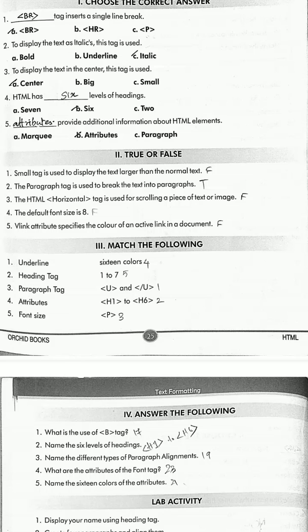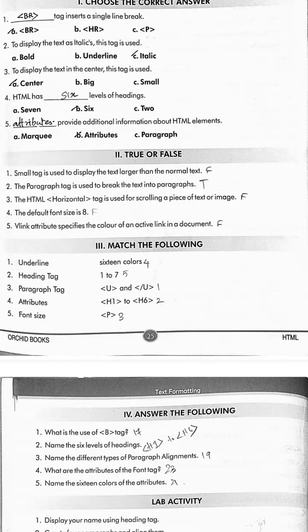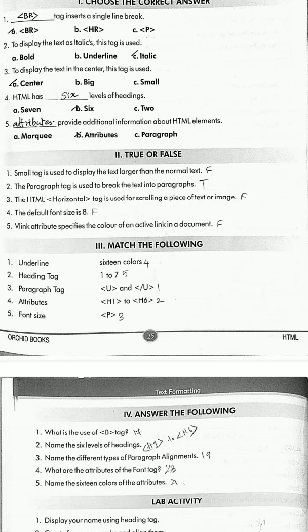Next is match the following. Underline corresponds to the u and slash u tag. Heading tag corresponds to h1 to h6. Paragraph tag corresponds to the p tag. Attributes correspond to 16 colors — as seen in the table. Font size ranges from one to seven, and the default size is three. So the answers are: 4, 5, 1, 2, 3.